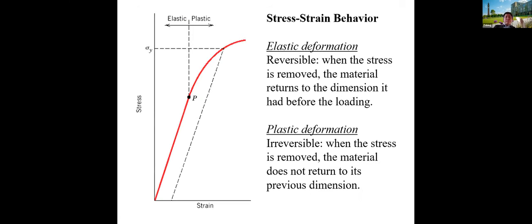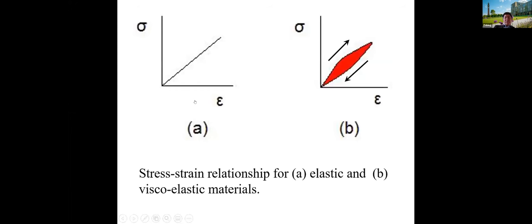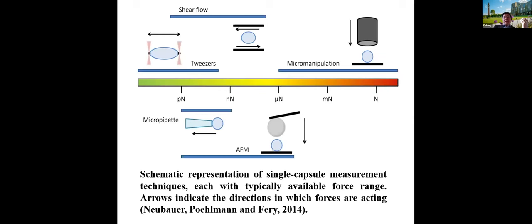In material science, people study the relationship between stress and strain. Most materials have an elastic region where the slope gives the Young's modulus. At greater deformation the material becomes plastic — it cannot return to its original shape. For elastic material the stress-strain relationship is linear. For viscoelastic material, the loading and unloading curves do not overlap — there is a hysteresis, which is a characteristic feature of viscoelastic materials. Several measurement techniques exist for softer solids: optical tweezers, micropipette technique, atomic force microscopy, and shear flow technique. Each can measure forces corresponding to different orders of magnitude.